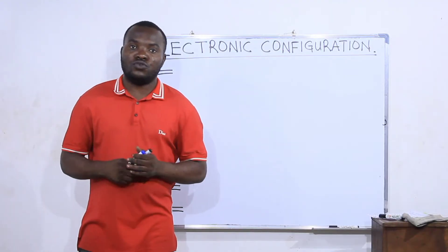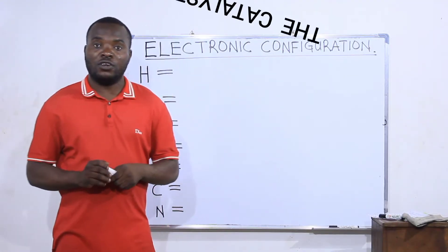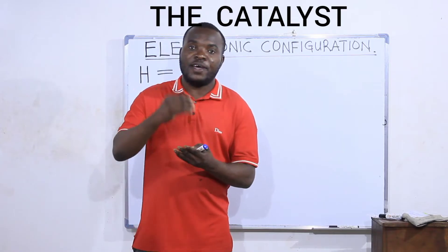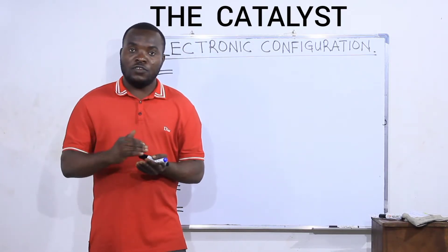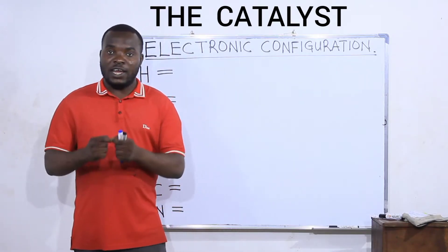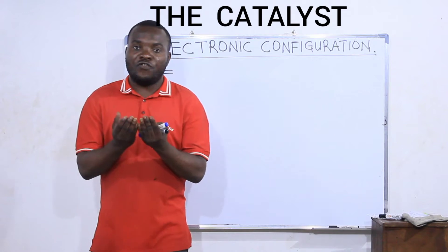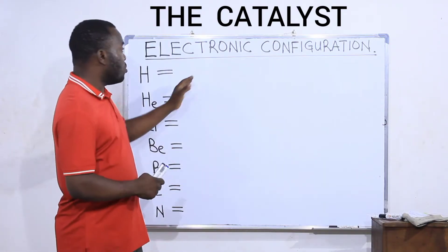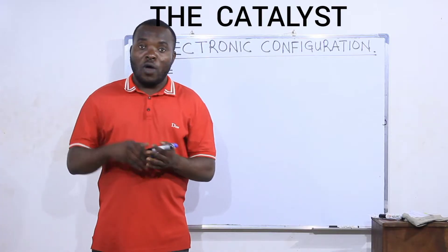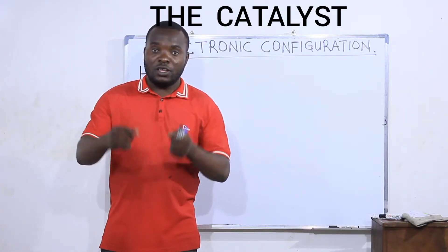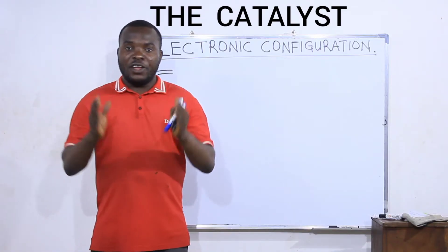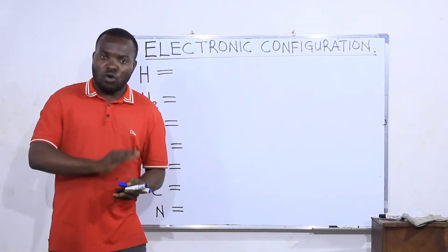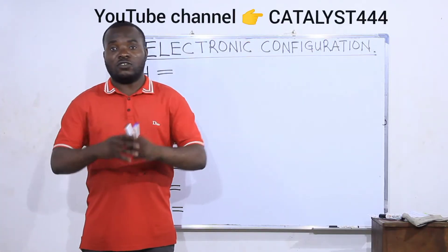In this video I'm going to teach you how to write electronic configuration of elements. Electronic configuration is the arrangement of the electrons in an atom into the respective orbitals according to their energy levels. The region of an atom where there is a probability of finding an electron is called an orbital. When arranging electrons in an atom into the orbitals, it follows a pattern — you don't arrange electrons anyhow.